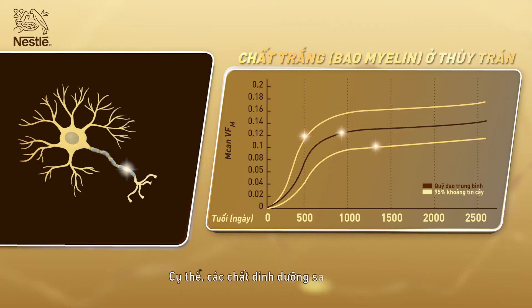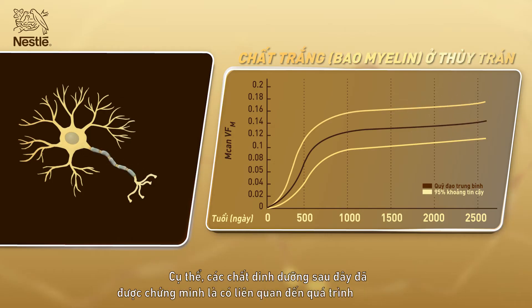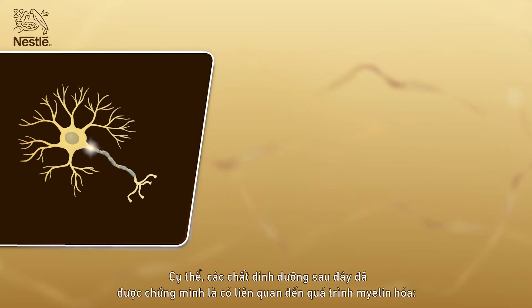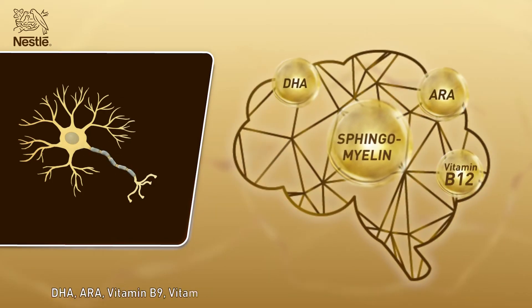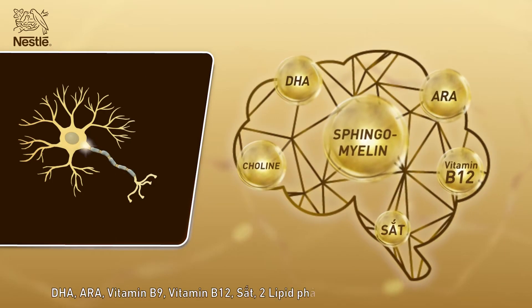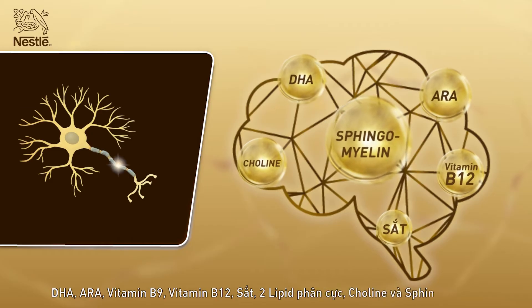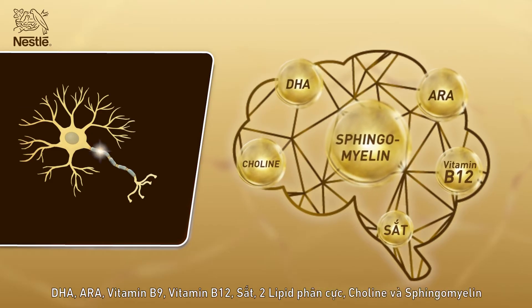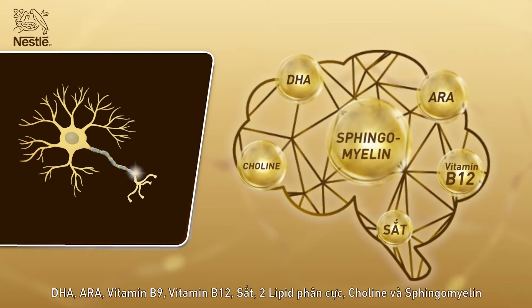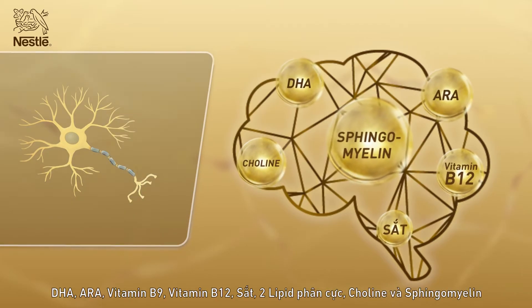Specifically, the following nutrients were shown to be associated with myelination: docosahexaenoic acid, arachidonic acid, vitamin B9, iron, phosphatidylcholine and sphingomyelin.